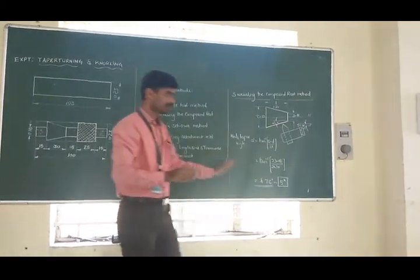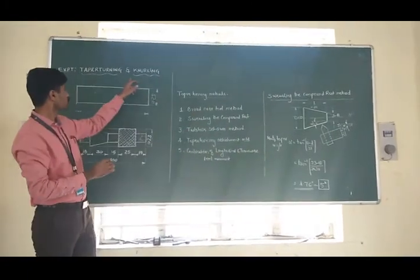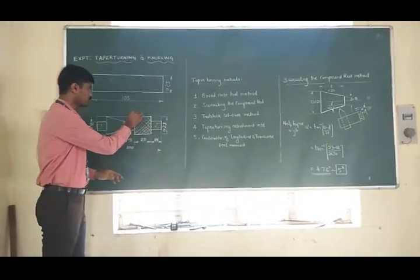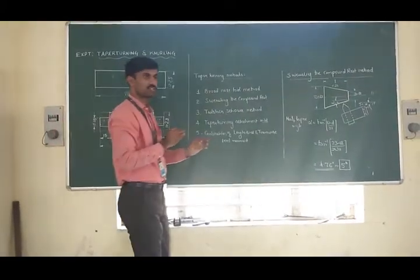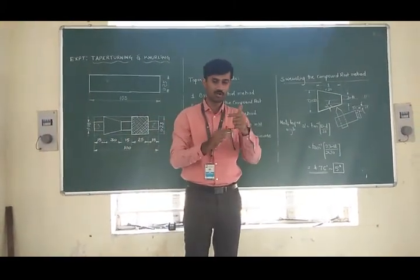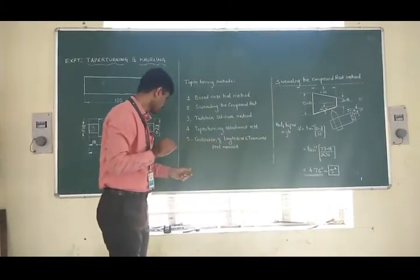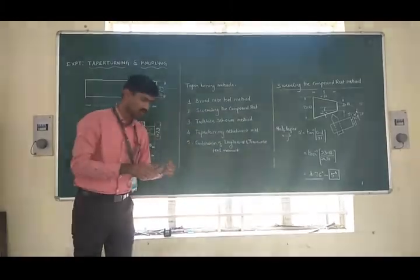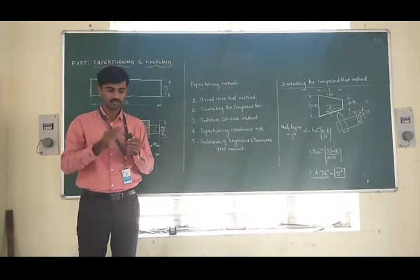Before concluding, we also talk about the knurling operation. The knurling operation is done in order to create a corrugated surface on a cylindrical workpiece. For that, a special cutting tool known as a knurling tool will be utilized. We are going to use 2 to 3 knurls which already have a certain design pattern, and the same pattern will be embossed on the workpiece.